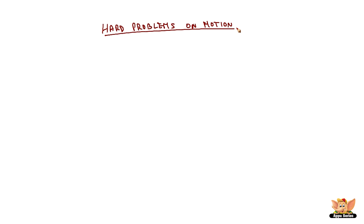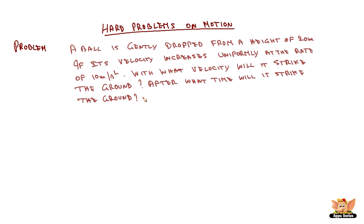Hard problems on motion using the three equations of motion. A ball is gently dropped from a height of 20 meters. If its velocity increases uniformly at the rate of 10 meters per second squared, with what velocity will it strike the ground, and after what time will it strike the ground?